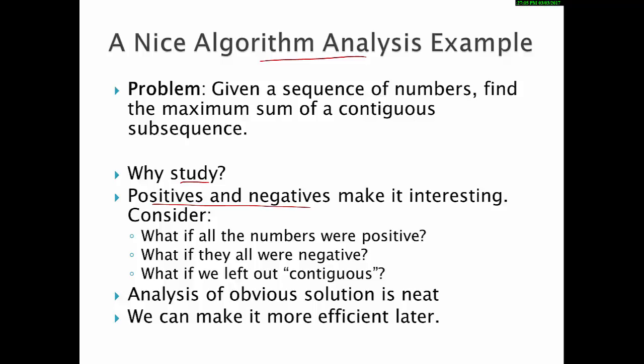It's interesting because of the mix of positives and negatives in the array. Now, if you consider, it's kind of interesting, what if they were all positive? What would the MCSS be if you had an array with all positive numbers? Yeah, you're right. It'd be the sum of the entire array. You just take all of them. That'd be boring. It always has the same answer. Just add up the numbers in the array.